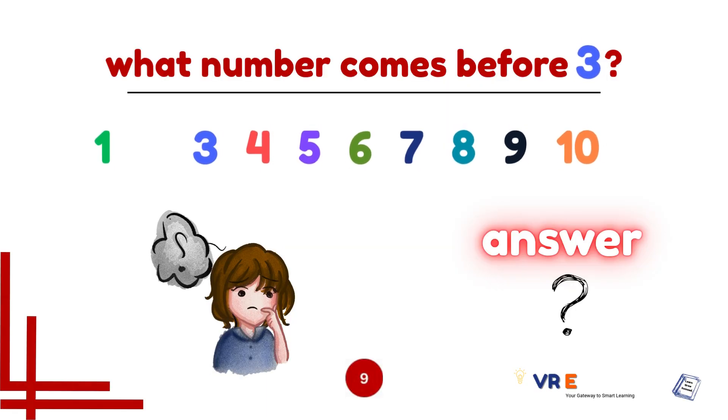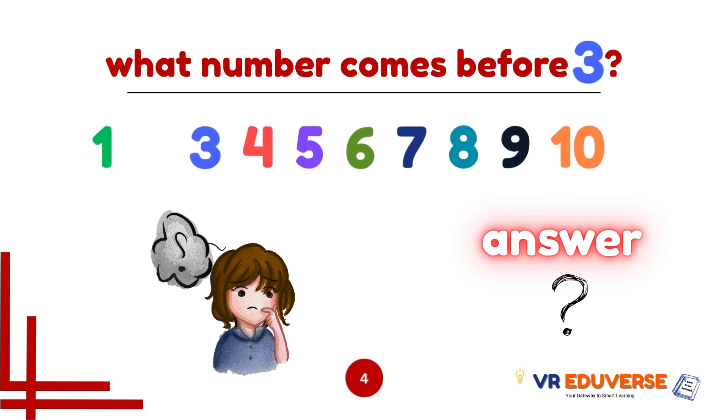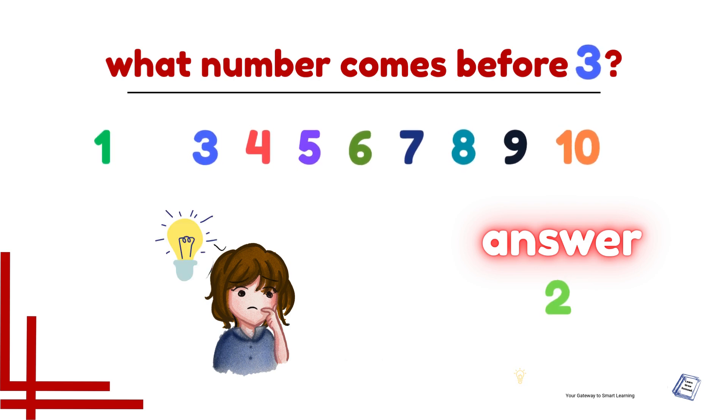What number comes before 3? Look closely. The answer is 2. That's correct. Brilliant.